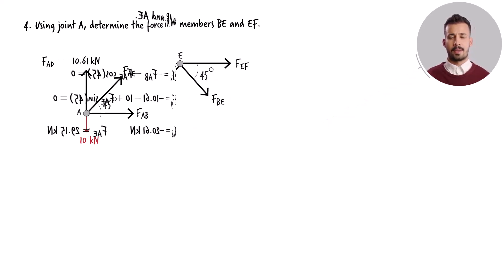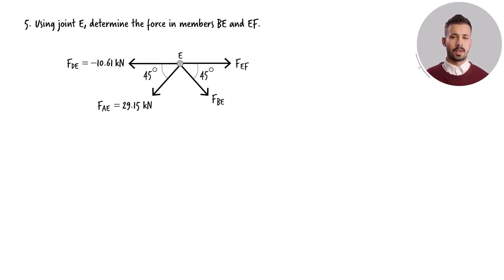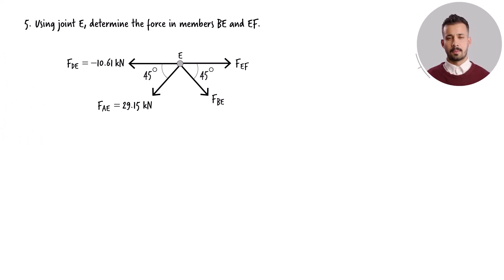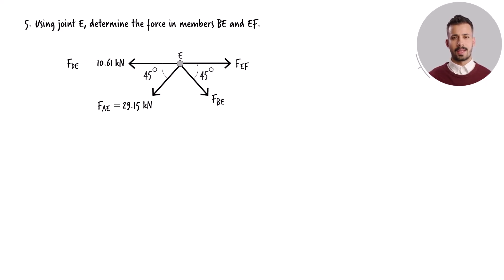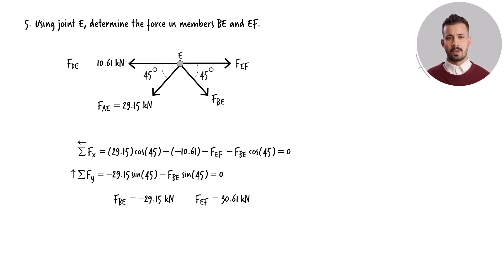Next, we examine joint E. Four member forces are acting at this joint, but only two of them are unknown. We can determine the unknown forces using the joint equilibrium equations.